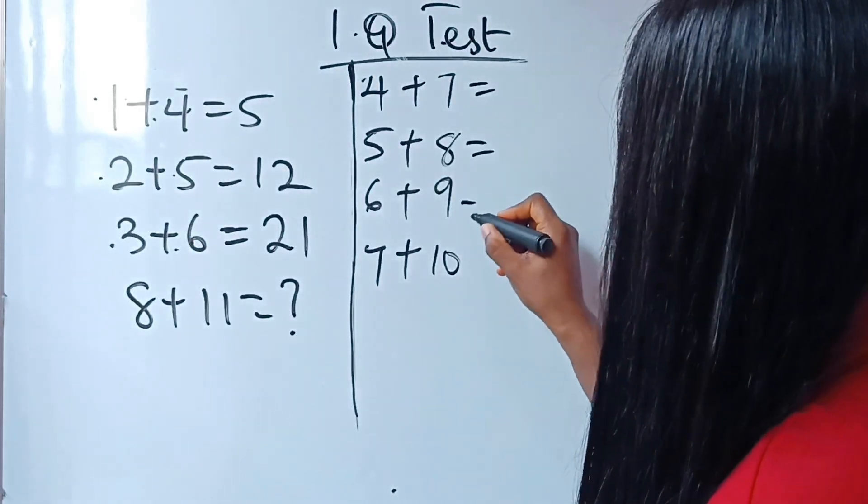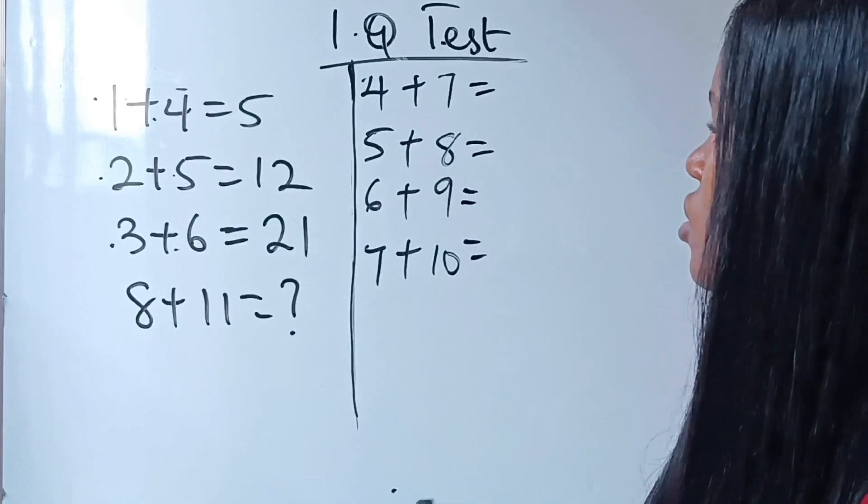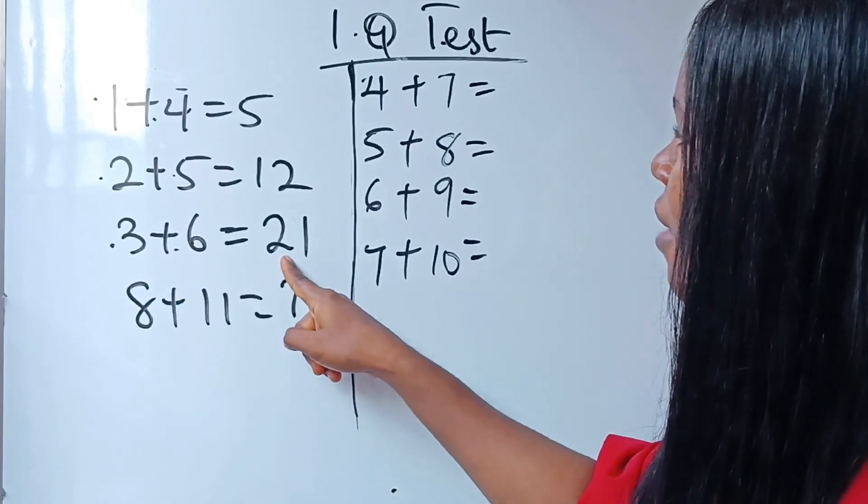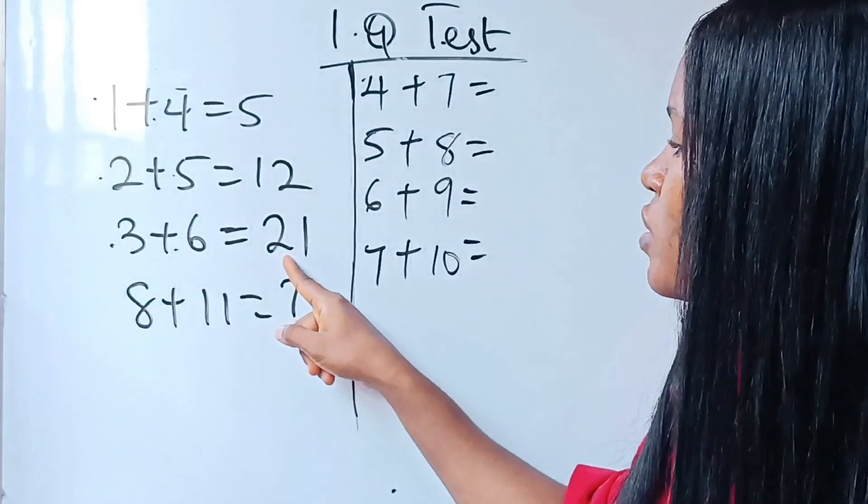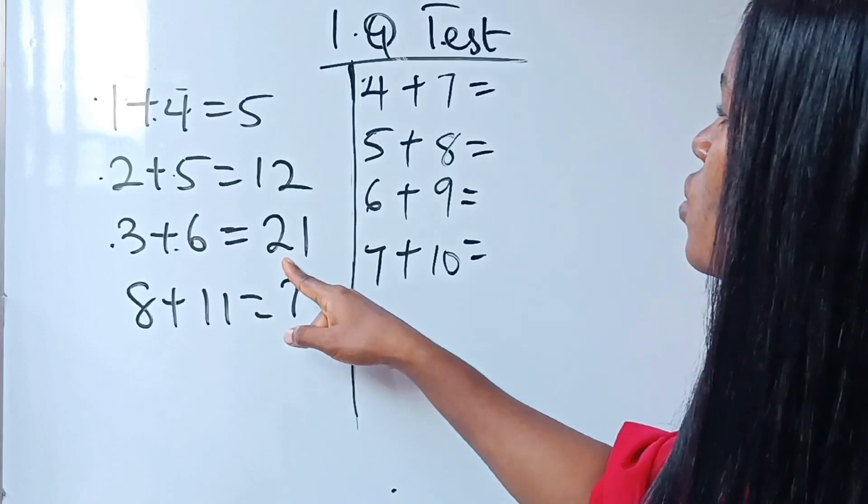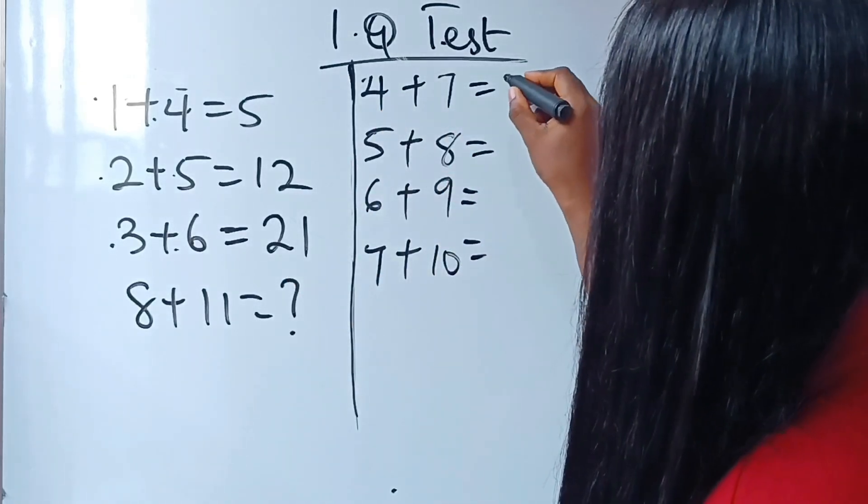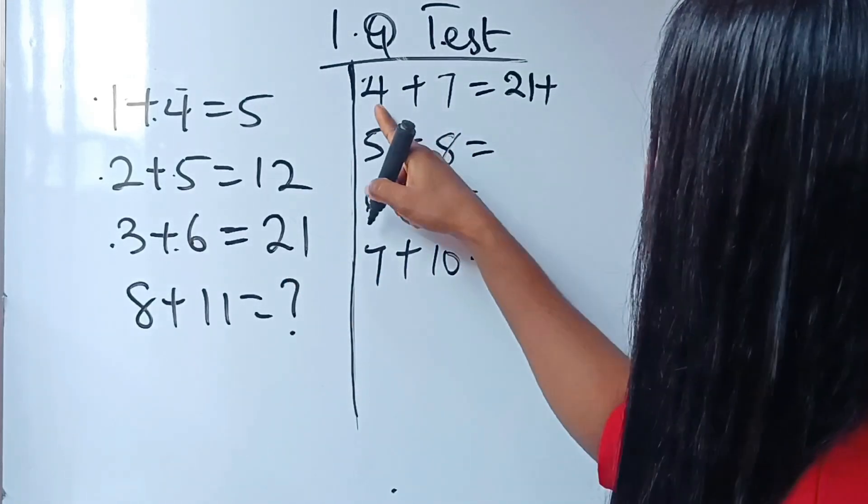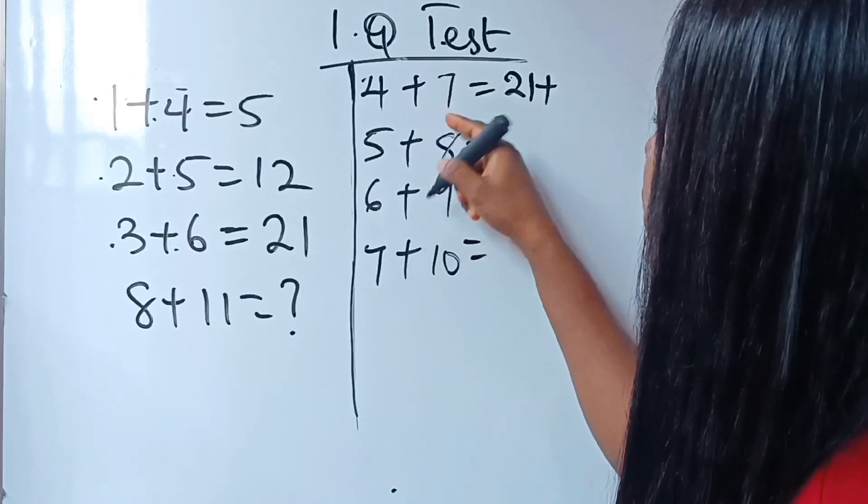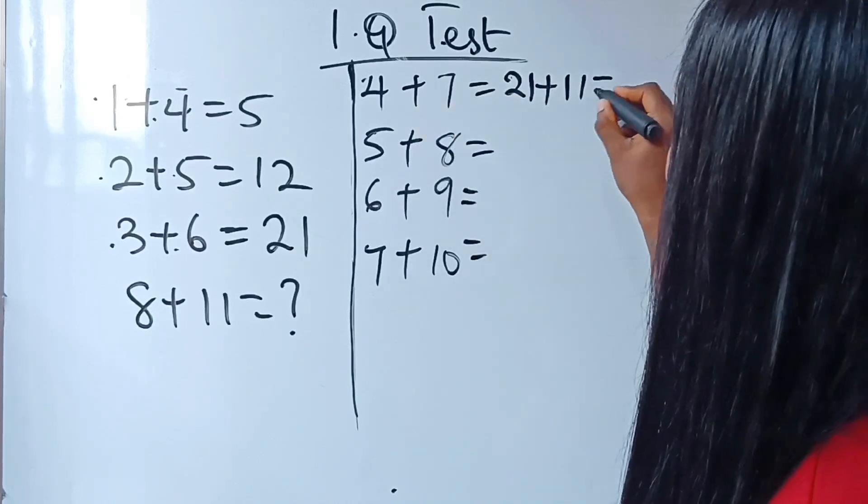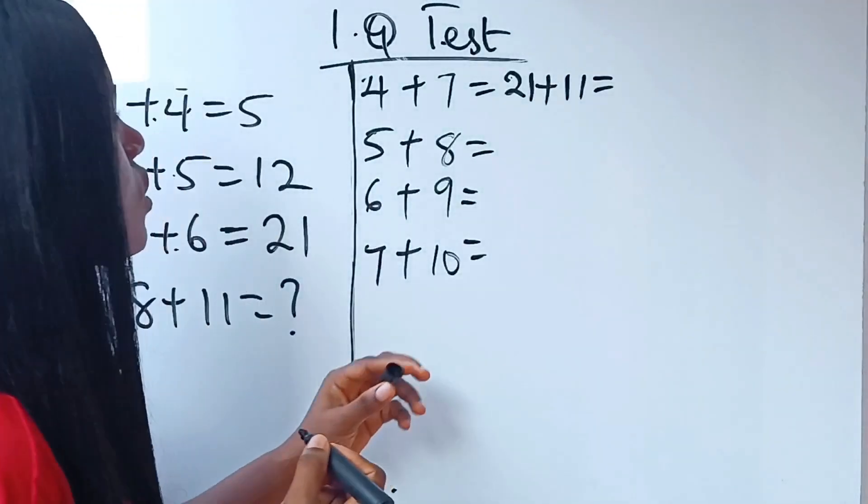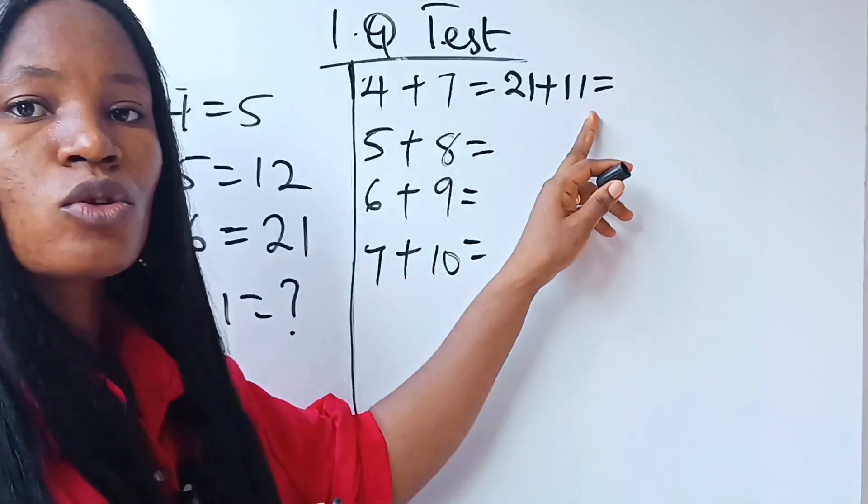Alright. Now, let's do this sequentially. So, the next number we have here is 21. That means we're supposed to add 21 to the sum of this, right? So, this should be 21 plus 4 plus 7 is what? 11. Alright? And this will give us 32.